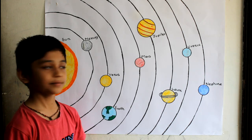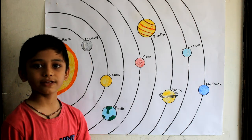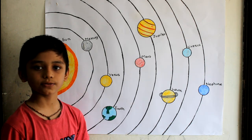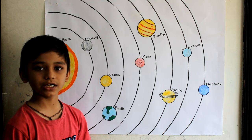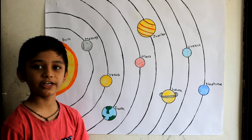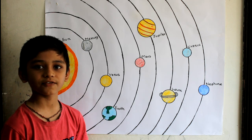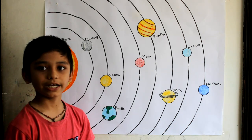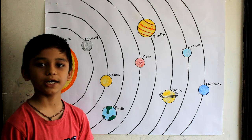First comes Mercury. Mercury is the smallest planet in our solar system and it is the nearest planet from the Sun. It is 58 million kilometers from the Sun and it has no atmosphere.